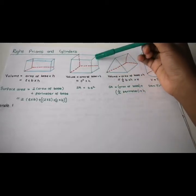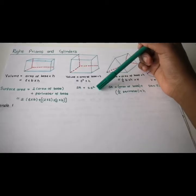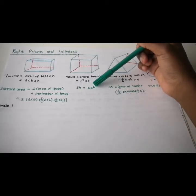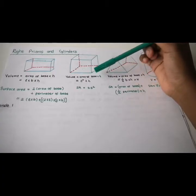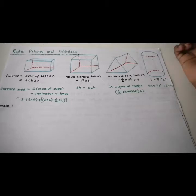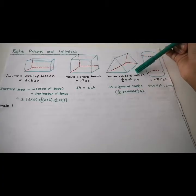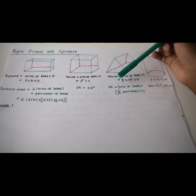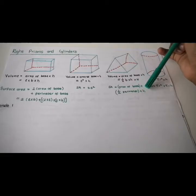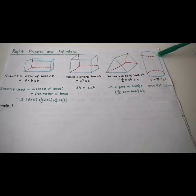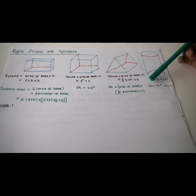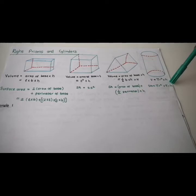For a cube, the total surface area is 6 times side squared, and the volume is side squared times height. For a triangular prism, the volume is half base times height times perpendicular height, and the total surface area is the area of the base plus half the perimeter times height. For a cylinder, the volume is pi r squared times height, and the total surface area is pi r squared plus pi r times height.